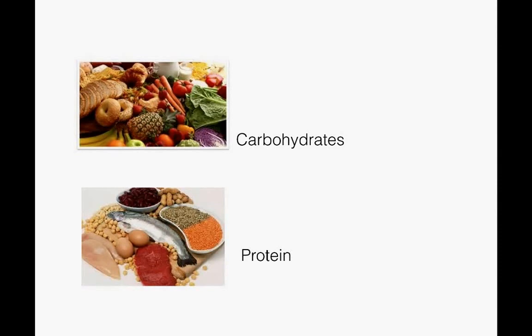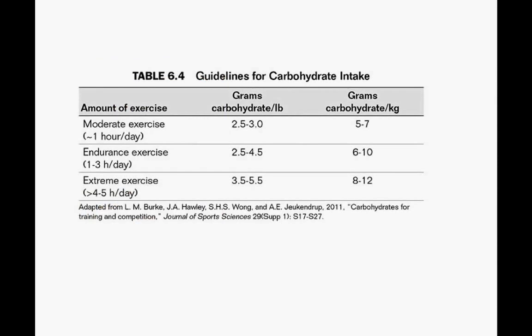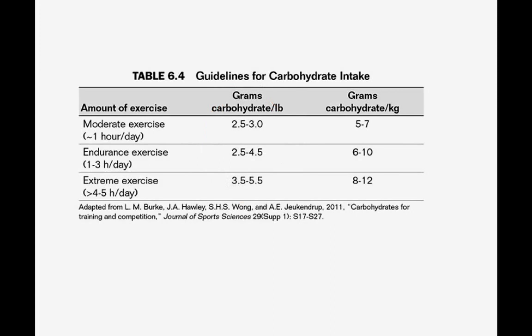Your activity level determines the amount of healthy carbohydrates and lean protein you need. The more active you are, the more you will need. Your text offers the following guidelines. You need to multiply your weight by the grams in the appropriate category to get the amount of carbohydrates an athlete should eat. Let's crunch some numbers.